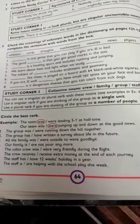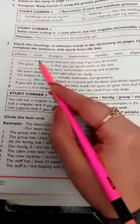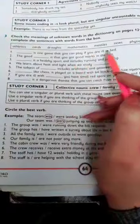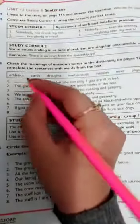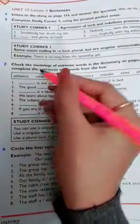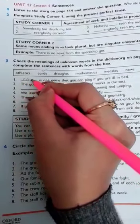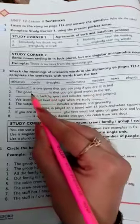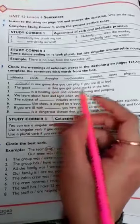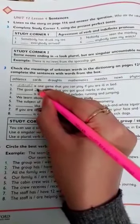Let's start with the first blank. Blank is one game that you can play if you are ill in bed. From these options, which is the game that you can play if you are ill? It is cards. The second one: the good blank is that you got good marks. What are we going to put here? The good news is that.